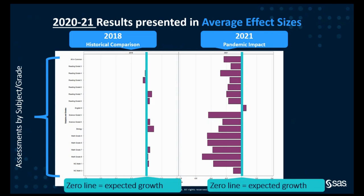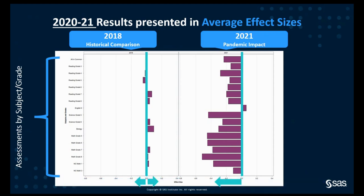Each group of bar charts has a line set at zero. Zero represents expected growth. Bars that are close to the expected growth line mean that, on average, students made the expected growth — in other words, students maintained their pre-pandemic trajectories. Bars to the right of expected growth mean that, on average, students made more than the expected growth; they scored higher than we would have expected based on the pre-pandemic average schooling experience. Bars to the left of expected growth mean that, on average, students made less than the expected growth — they scored lower than expected based on their pre-pandemic trajectories. In comparing the bars between 2018 and 2021, there are distinct differences. On the left-hand side, for the 2018 historical comparison, the bars are fairly close to zero. Some bars have average positive effects and other bars have average negative effects, but all of the effects are pretty small.